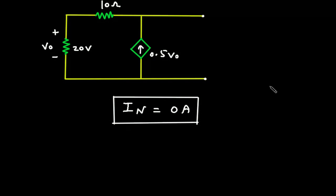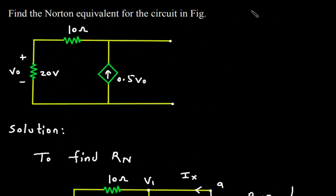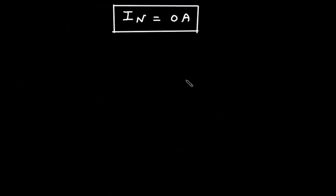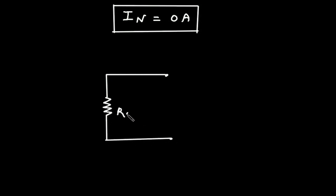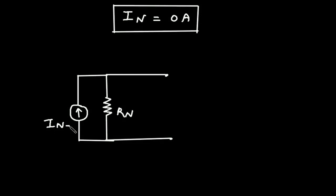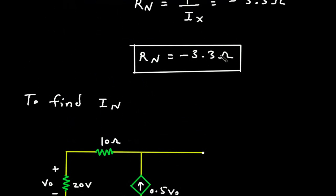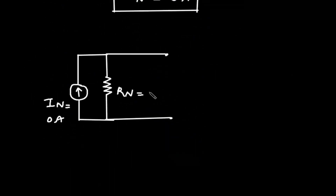The Norton equivalent consists of Rn in parallel with In. In is equal to 0 ampere and Rn is equal to minus 3.3 ohm. This is terminal A and this is terminal B.